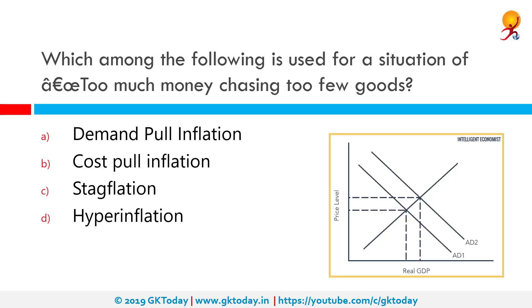Which among the following is used for a situation of too much money chasing too few goods? The correct answer is demand-pull inflation. Demand-pull inflation arises when aggregate demand in an economy outpaces aggregate supply. It involves inflation rising as real GDP rises and unemployment falls as the economy moves along the Phillips Curve. This is commonly described as too much money chasing too few goods.